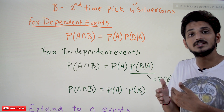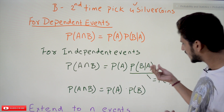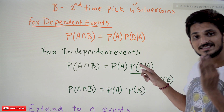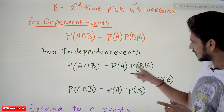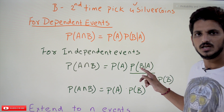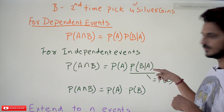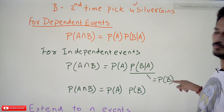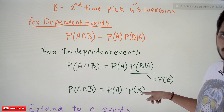Independent events are not affected by the occurrence of other events. Whether A occurred or not, it does not affect the probability of B. So P(B|A) = P(B) for independent events. Therefore, for independent events, P(A∩B) simplifies to P(A) · P(B).